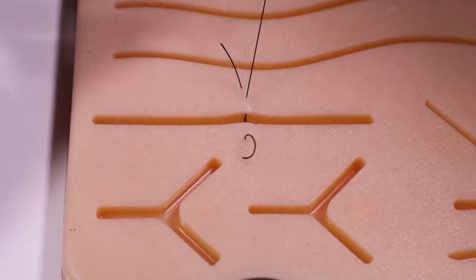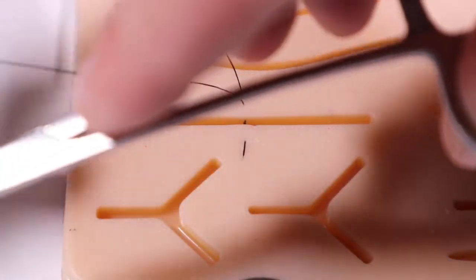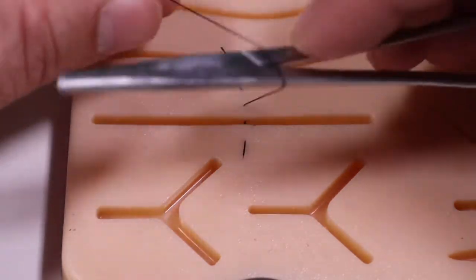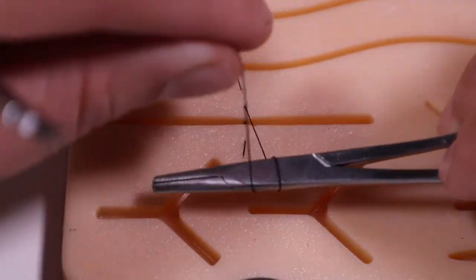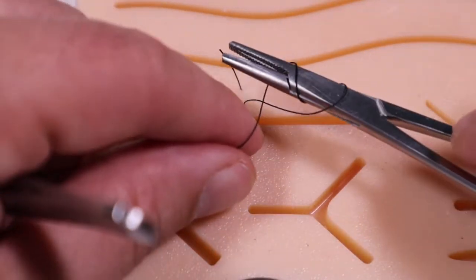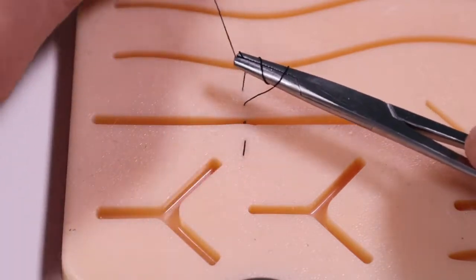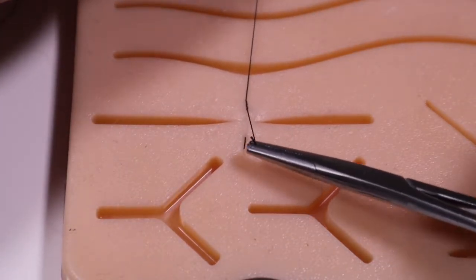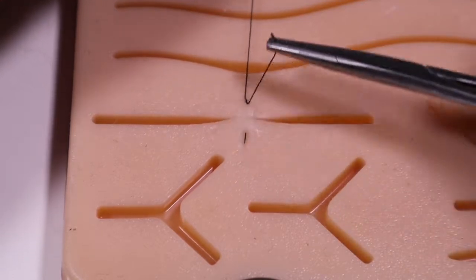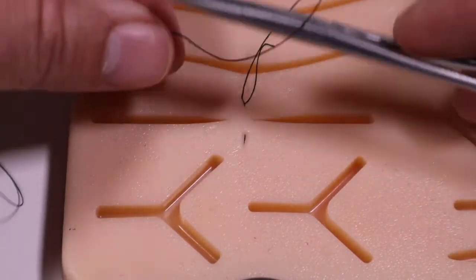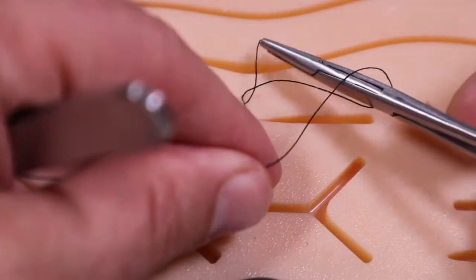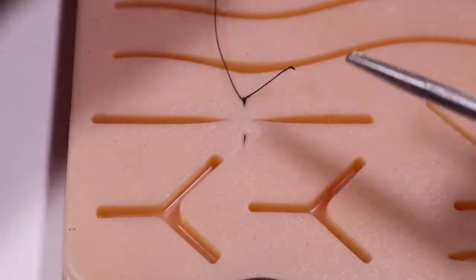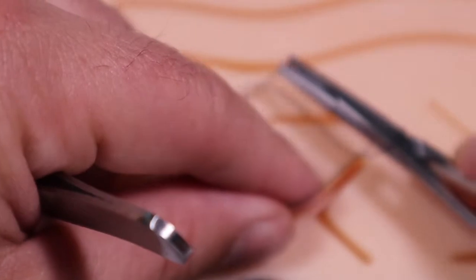So you'll cinch that down and then you'll tie just as you do any other with two forward throws around your needle driver. Grab the tip of that needle driver and pull down, tighten that edge down and cinch it up, and then one reverse and then another forward.